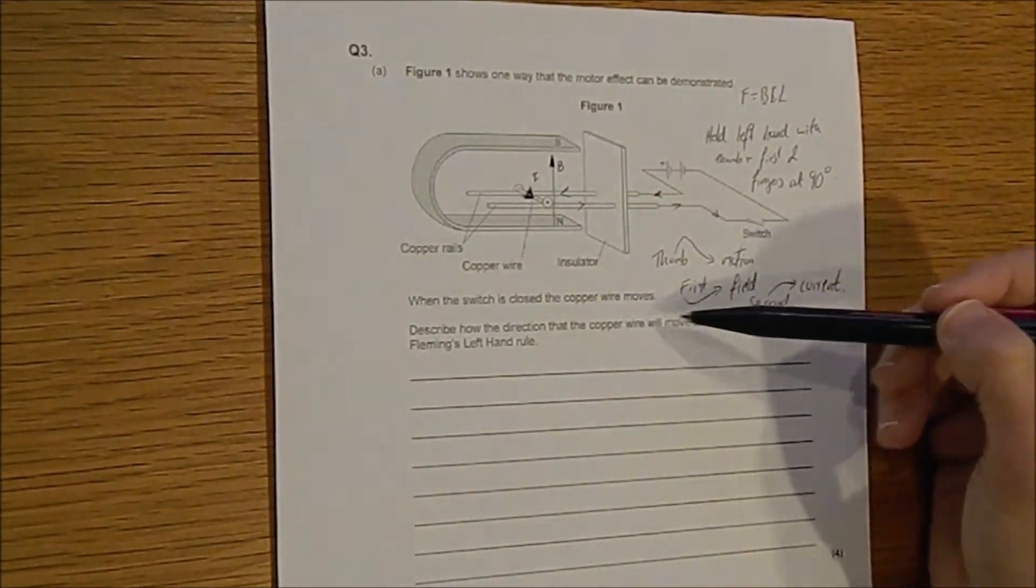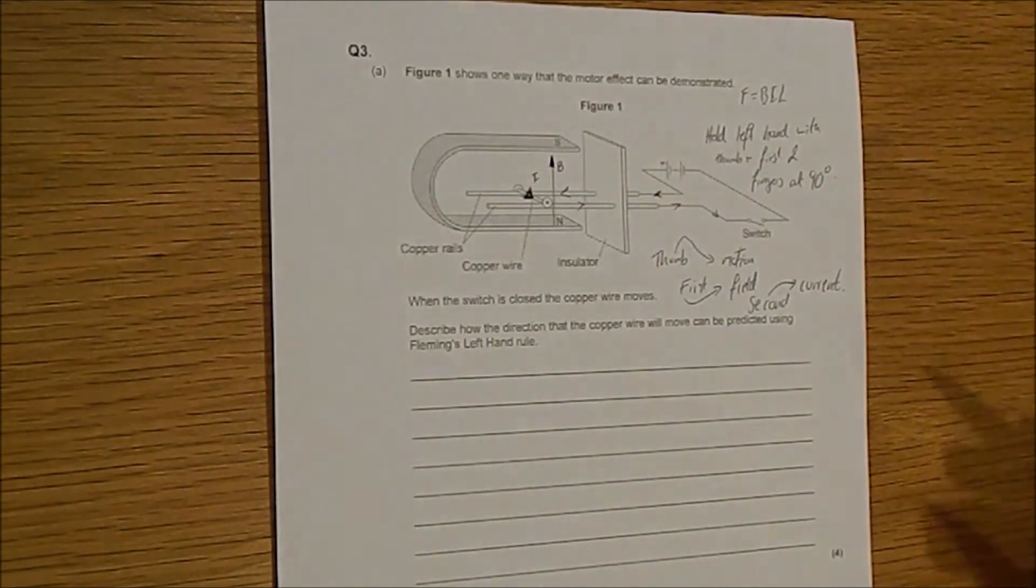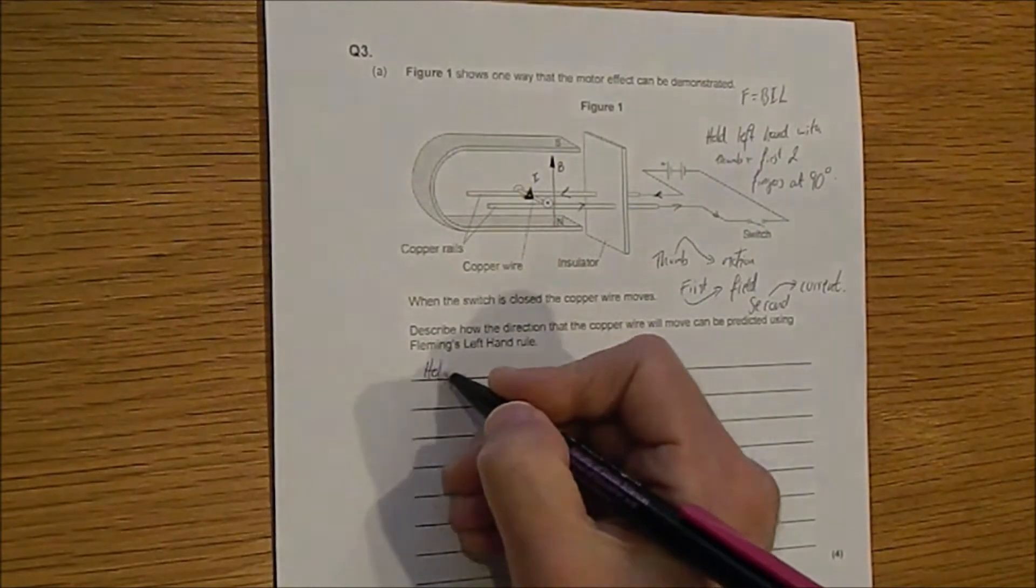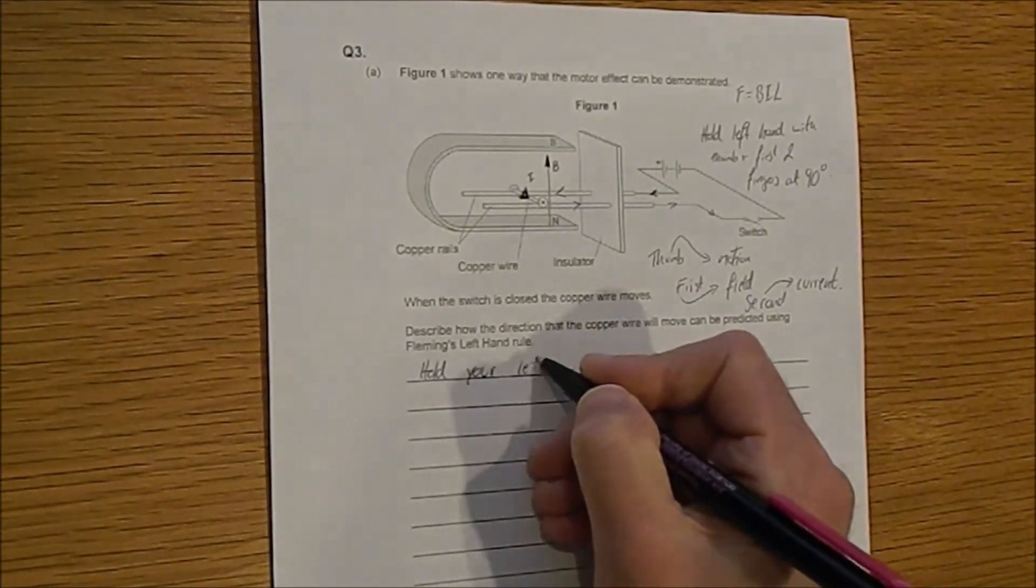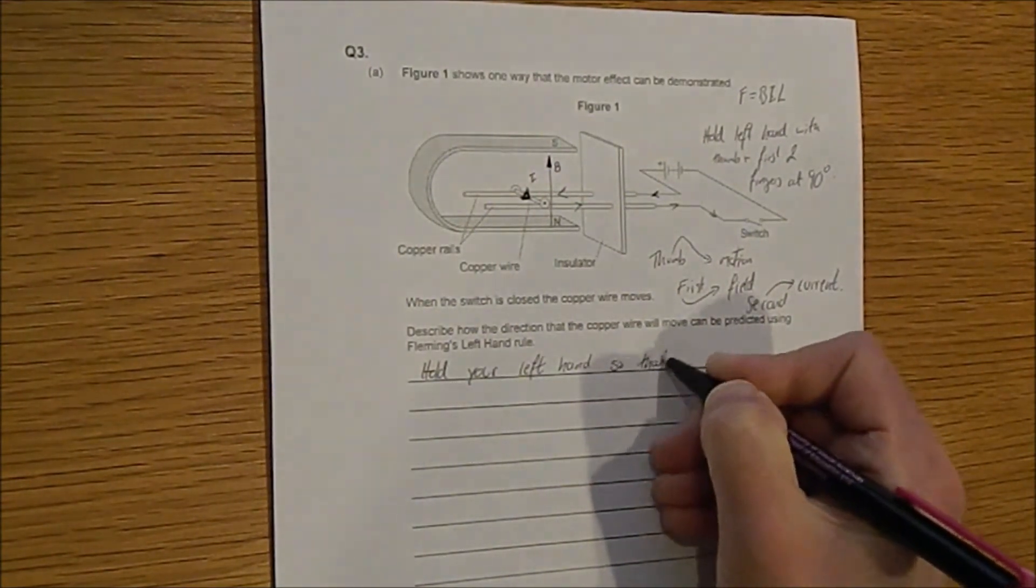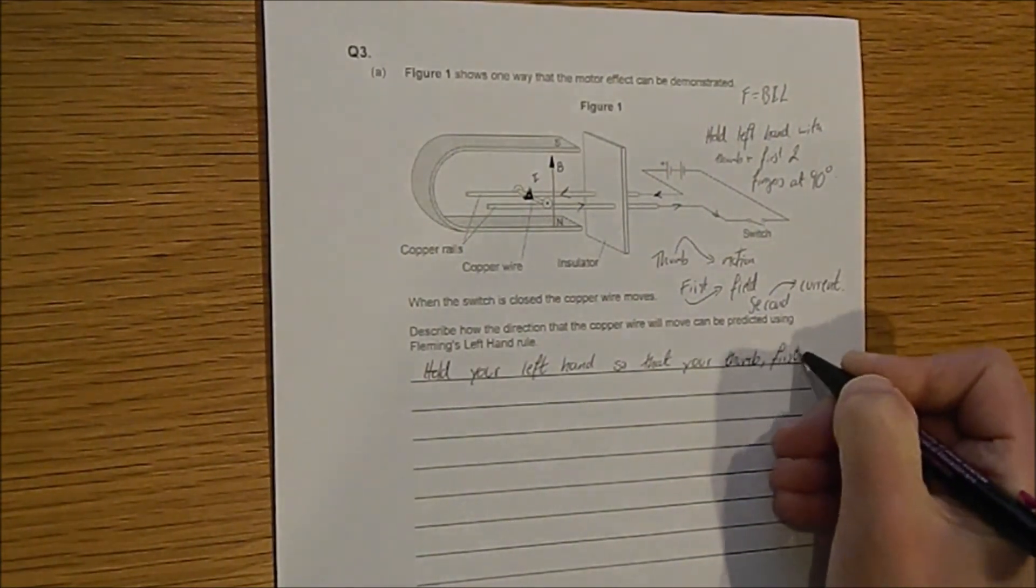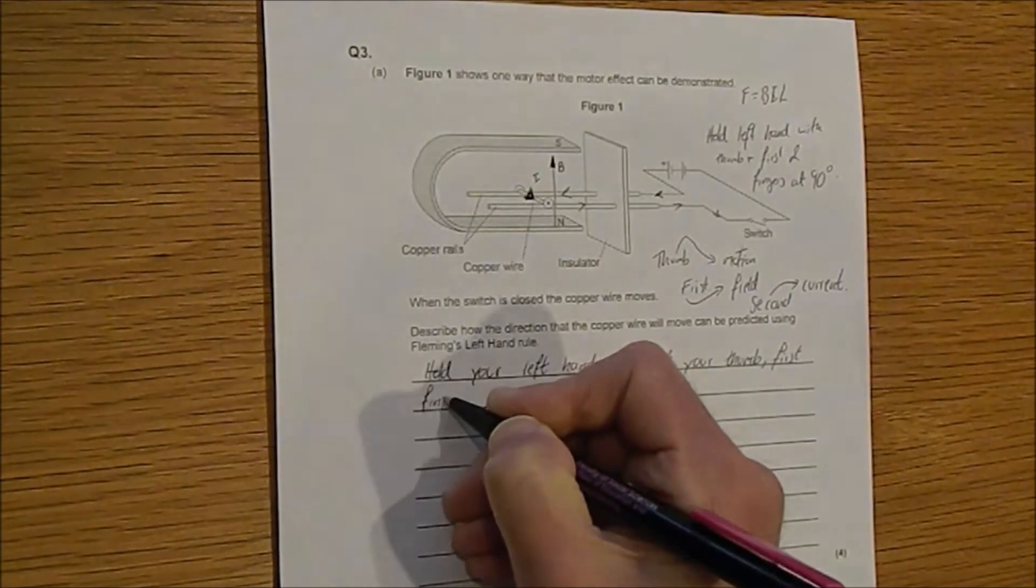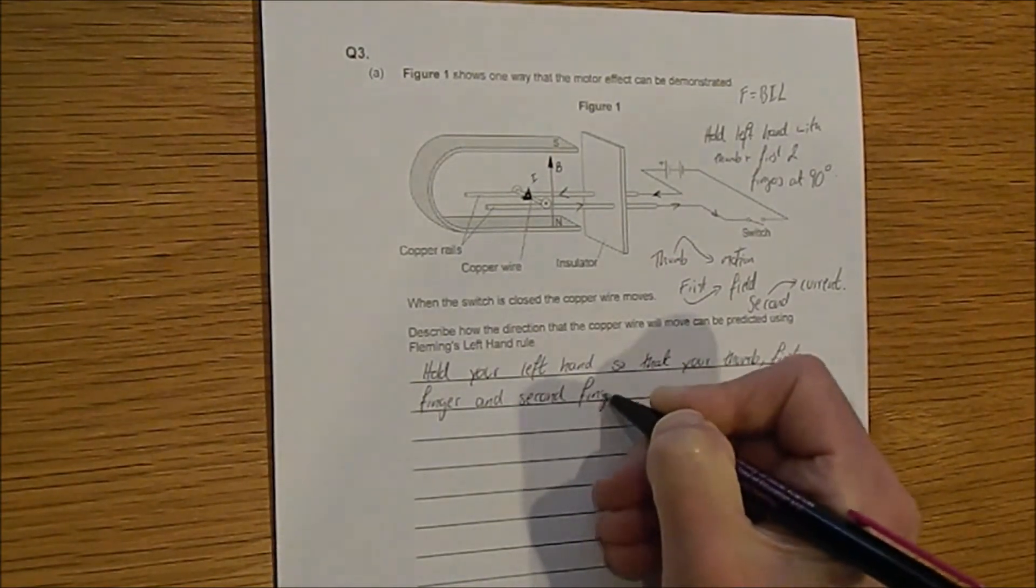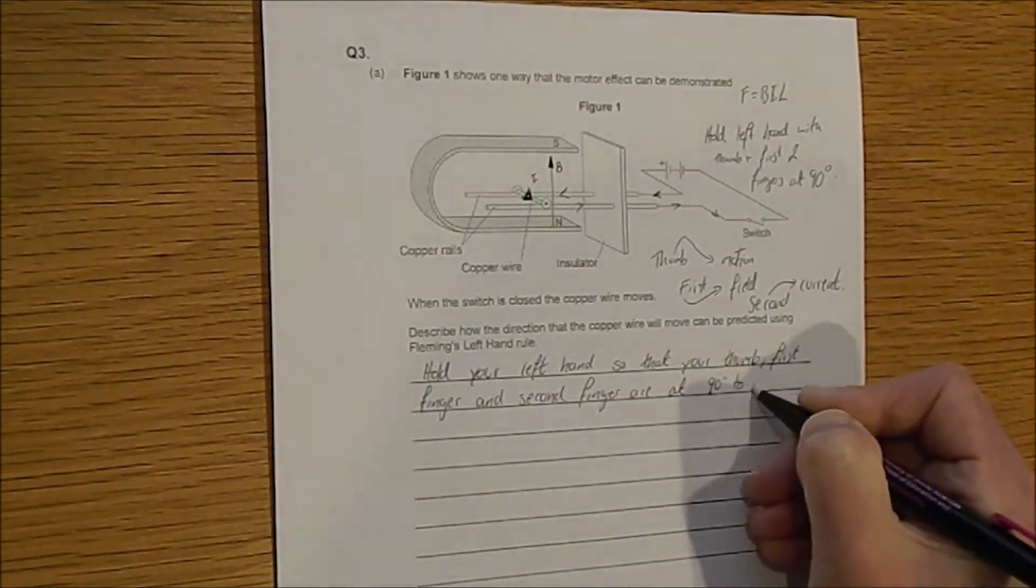Describe how the direction the copper wire will move can be predicted using Fleming's left hand rule. Okay, let's start the answer then. Hold your left hand so that your thumb, first finger and second finger are at 90 degrees to one another.